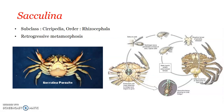We have already seen retrogressive metamorphosis in the previous video on Sacculina. The adult Sacculina does not bear any arthropod characters, but the larval forms are well developed and possess many arthropod features. So what happens is a larva with arthropod features will develop into an adult Sacculina which does not have arthropod characters; instead it has degenerate characters. Such a kind of metamorphosis is known as retrogressive metamorphosis.